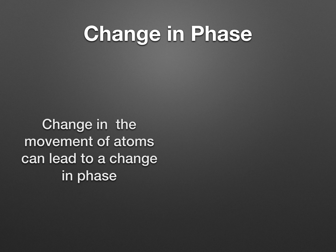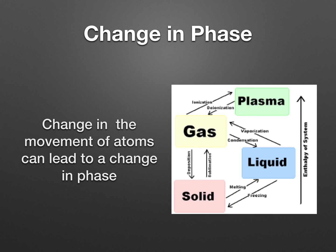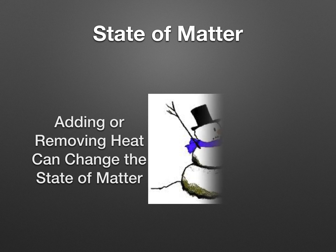There's a change in phase. A change in the movement of atoms can lead to a change in phase — meaning going from one of the states of matter. Believe it or not, there are four states of matter: plasma, gas, liquid, and solid. If you start from the solid and move up, as you heat up, you will transition into the different phases. Some things go through all four phases; some things only go through two phases, depending on the molecule, element, or atoms involved. Adding or removing heat can change the state of matter.